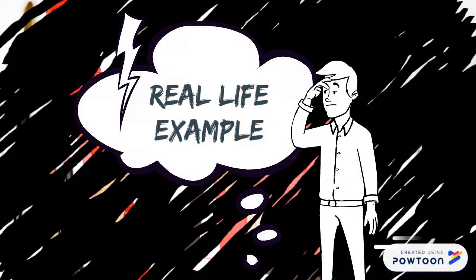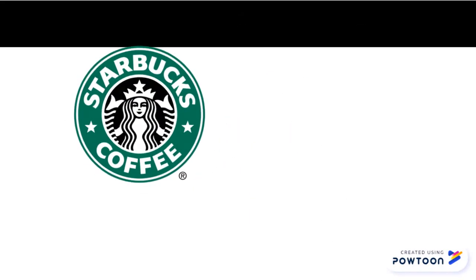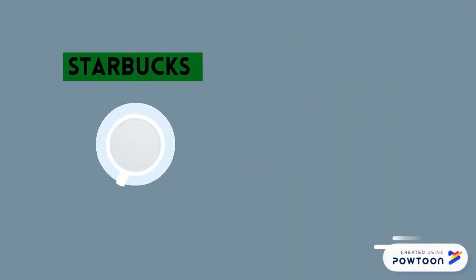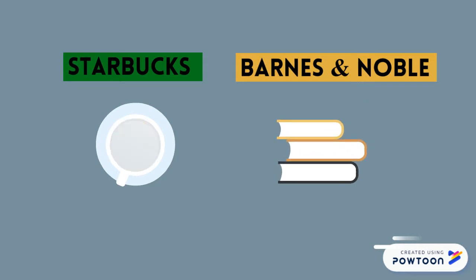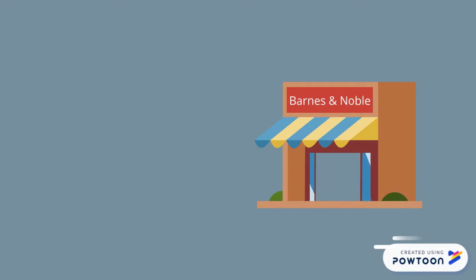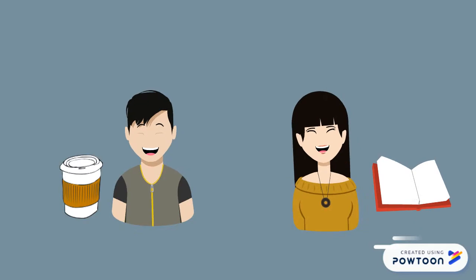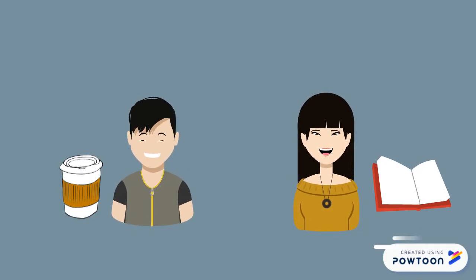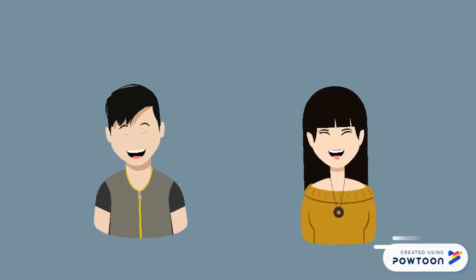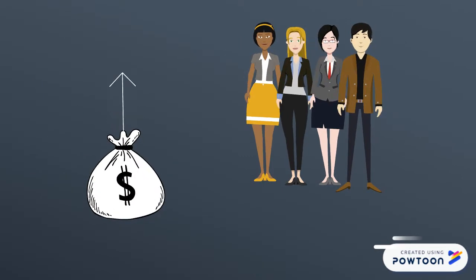Now, let's hop on to the last segment, a real-life example. One successful case is that of Starbucks and Barnes & Noble. Starbucks and Barnes & Noble felt that coffee and books go well together, so Barnes & Noble agreed to let Starbucks open in its stores. This allowed customers from both stores to interact with the space — customers shopping for books can take a short break at Starbucks, or Starbucks customers can read a book while sipping their coffee. This increased foot traffic for both companies and eventually gave them more profit.